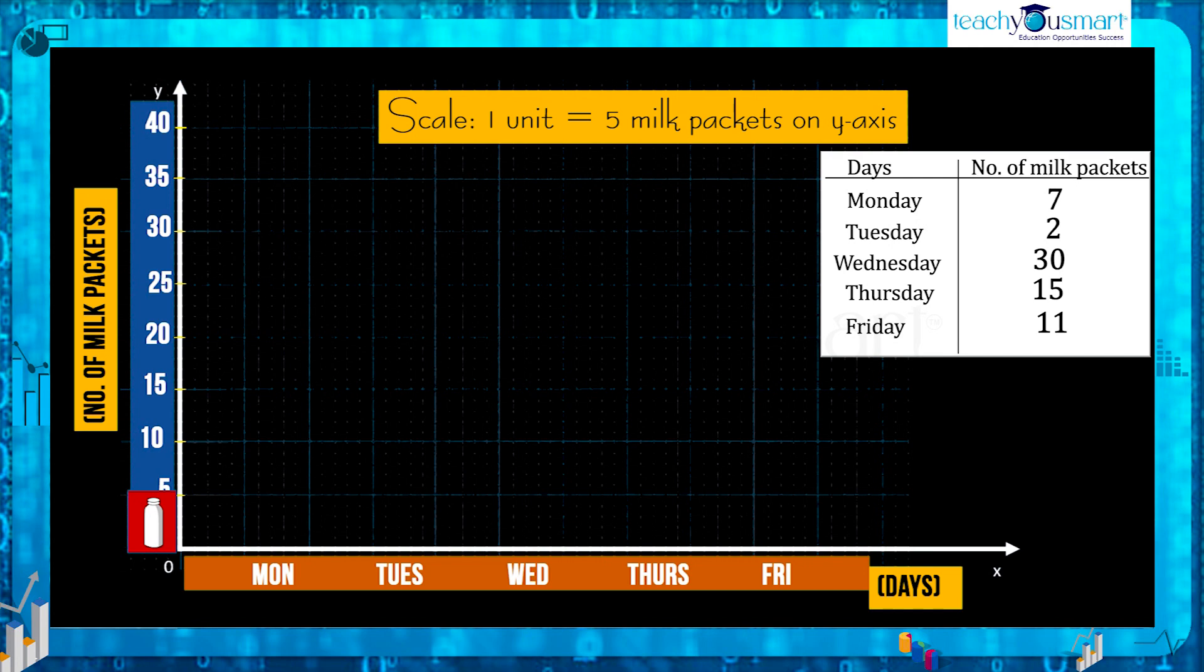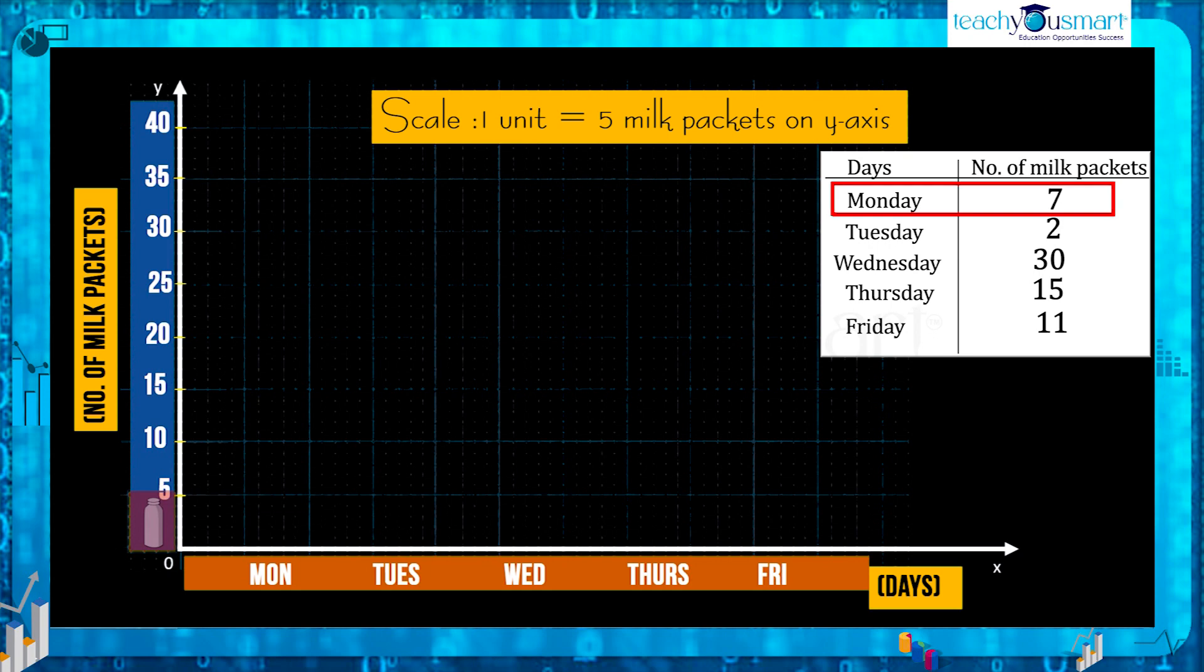To show the number of objects, draw bars of uniform width with equal spacing between them. On Monday the number of milk packets sold is seven. We should mark a bar corresponding to both Monday, the value on the vertical axis, and join it with the day. Similarly we can mark each data according to the days.